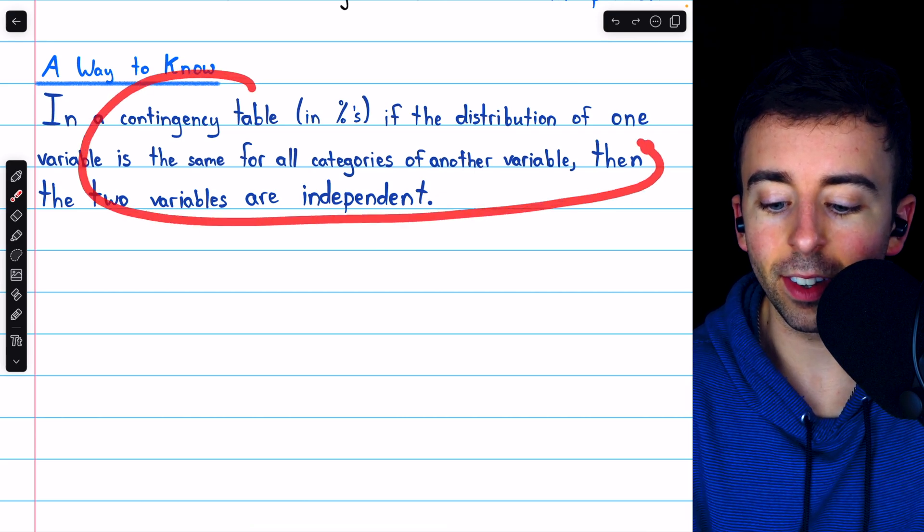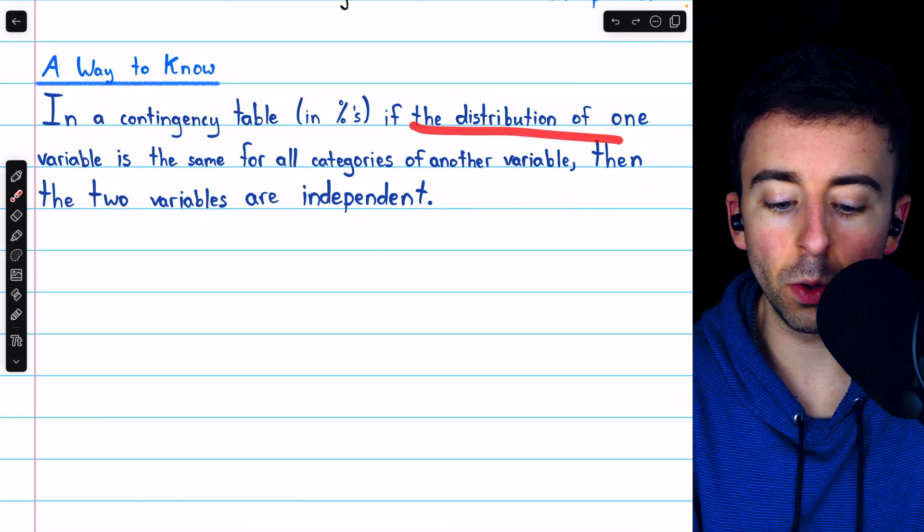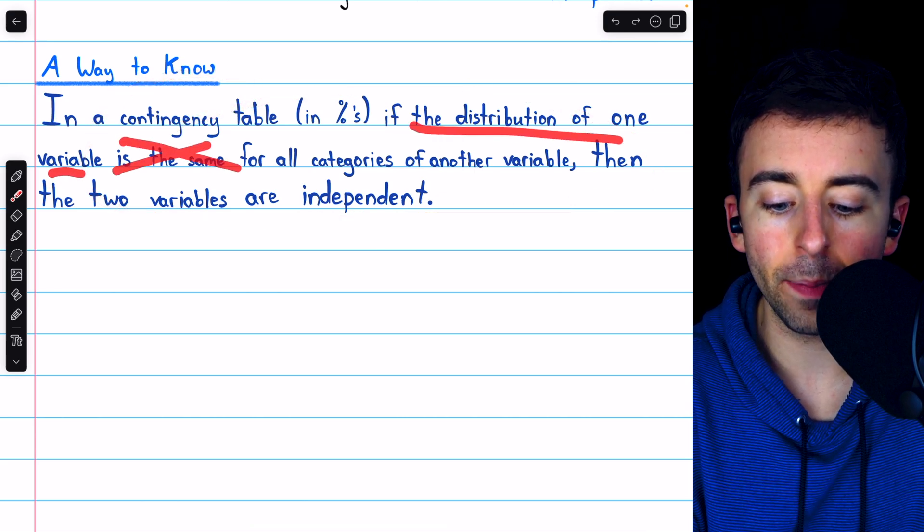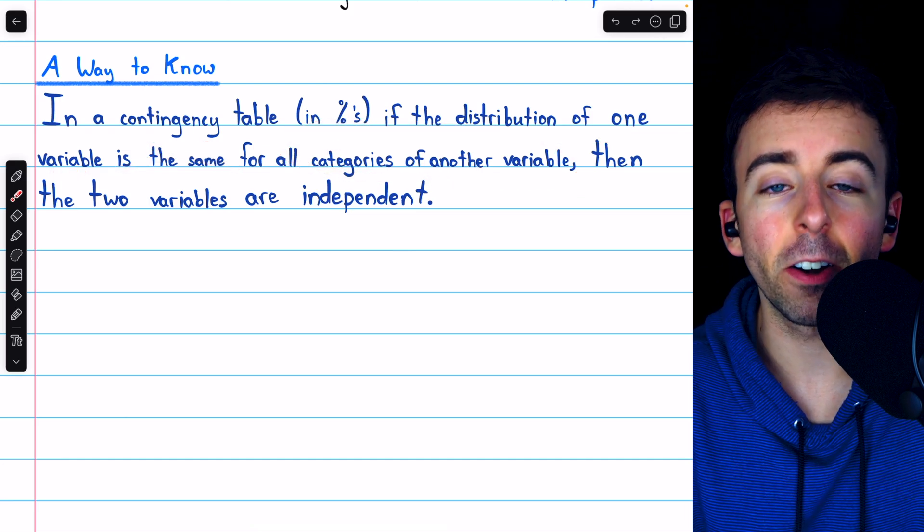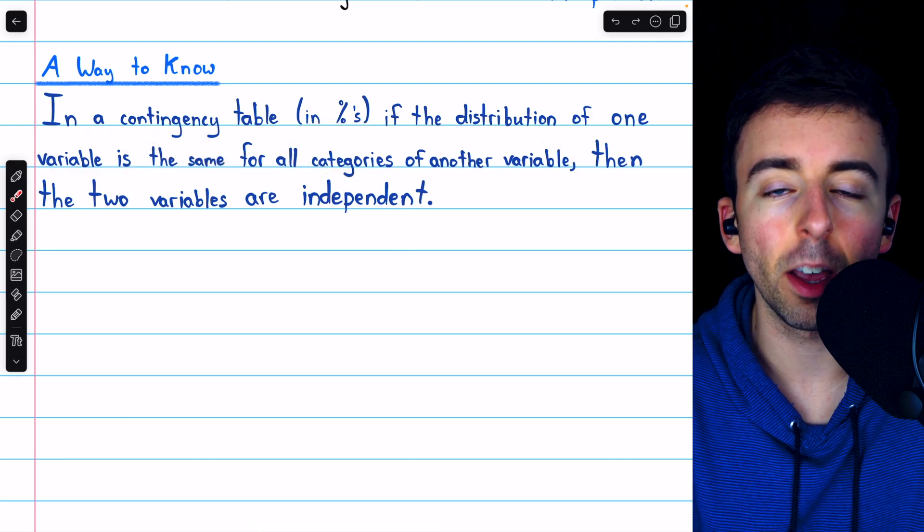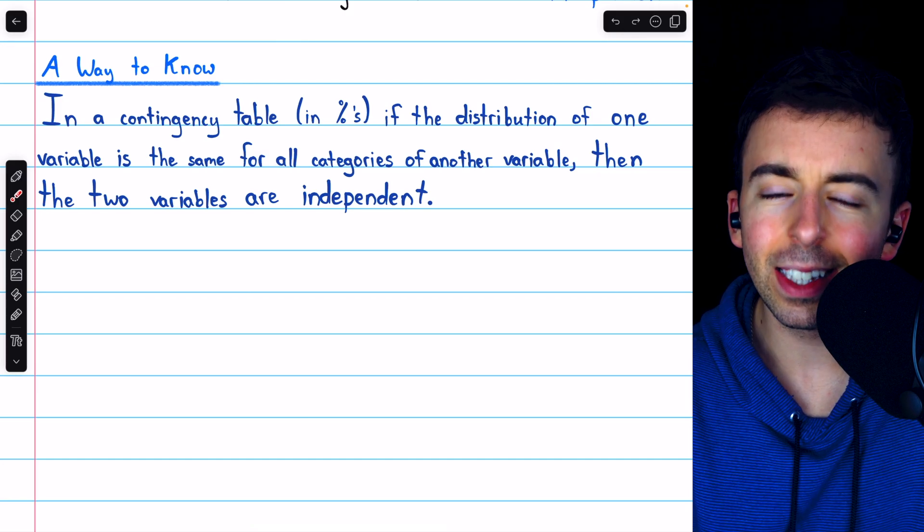On the other hand, if this is not the case, if the distribution of one variable isn't the same for all categories of another variable, that would be evidence that they are not independent, that there is some association between them. Let's look at an example.